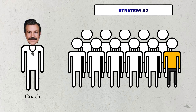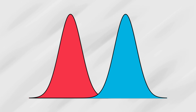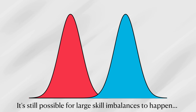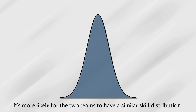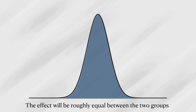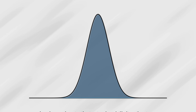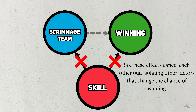Another approach the coach could take is to randomly distribute the players across the two teams. While it's still possible for all the skilled players to end up on one team, it's much more unlikely. What's more likely is that the teams will have a more even distribution of skill. The idea is: even if skill has an effect on which team wins, this effect will be roughly equal between the two teams, thanks to the similarity in the skill distribution. The effect of years of experience sort of cancels out, enabling other factors to play a role in winning the scrimmage.